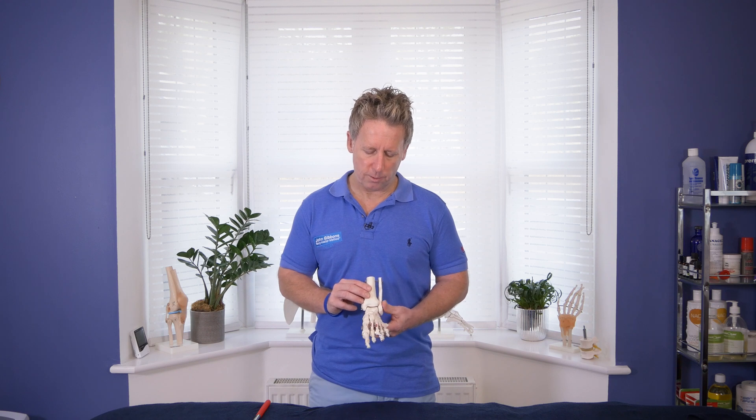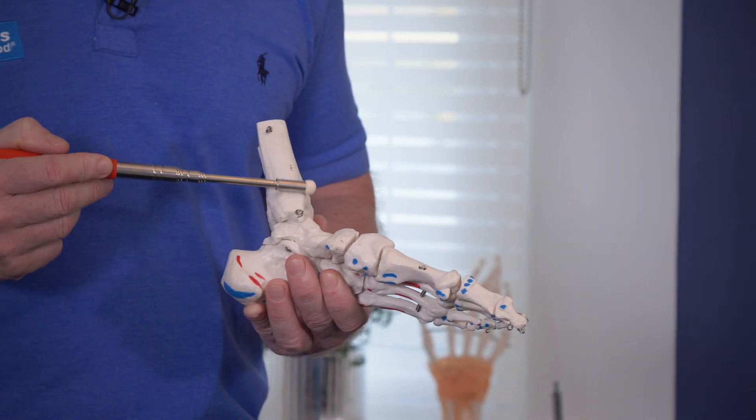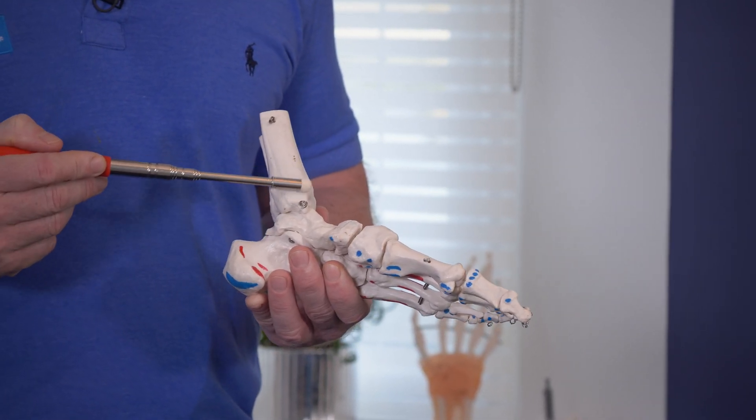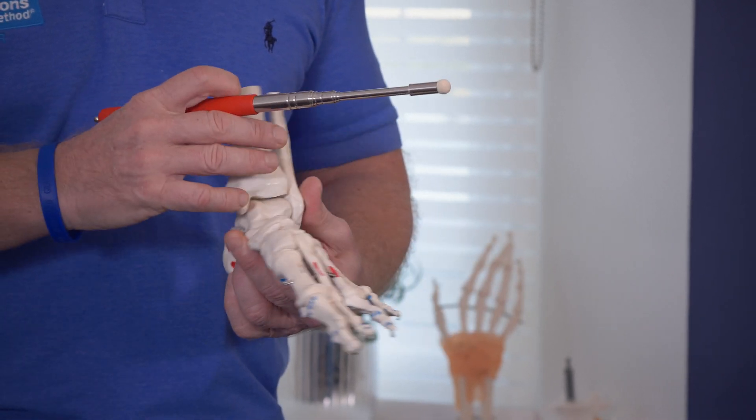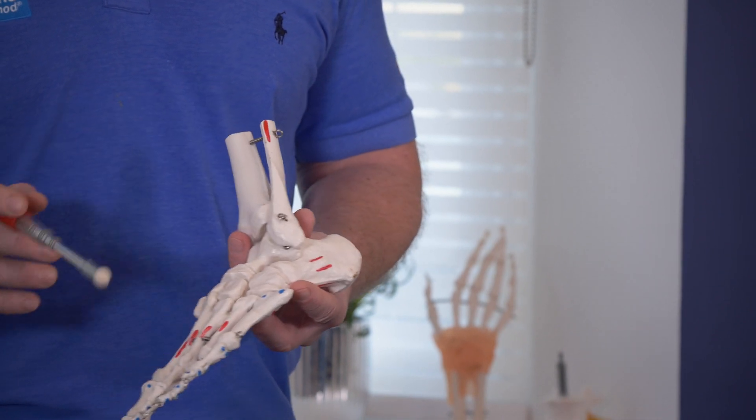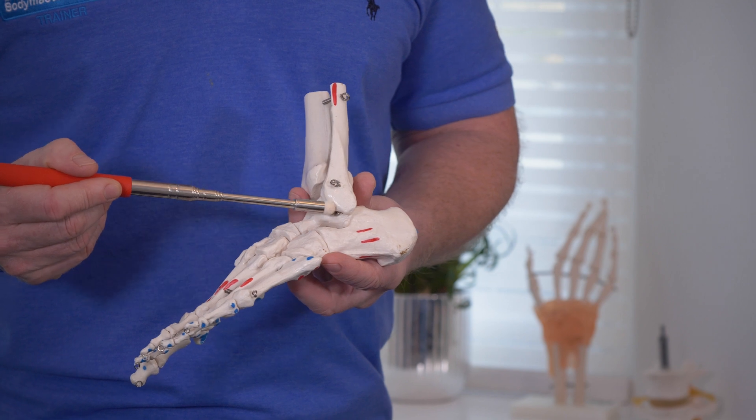So let's run through them to start with. This is the distal part of the tibia, and where it ends here is known as the medial malleolus along this region. The distal part of the fibula is known as the lateral malleolus, and that is a part here.